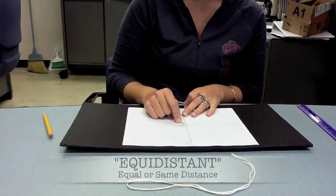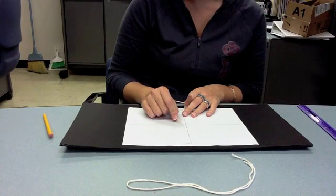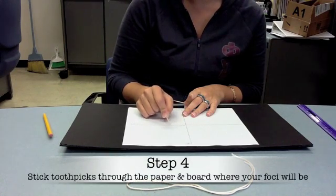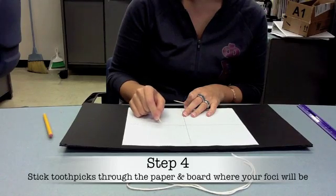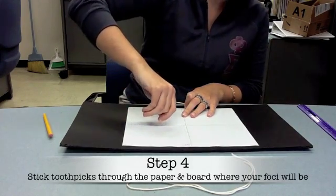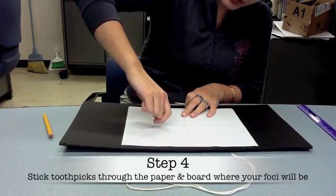So I'm going to start from my origin and I'm going to count over 1, 2, 3, 4, 5, 6, 7, 8, 9 spots. And that's where my first foci will go.